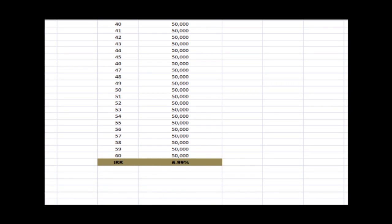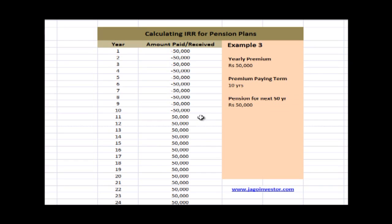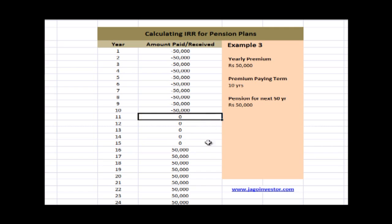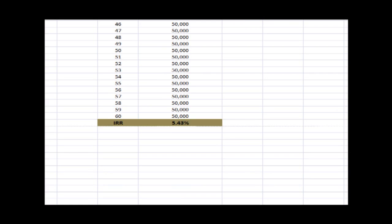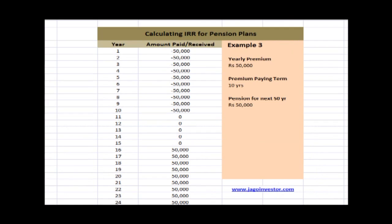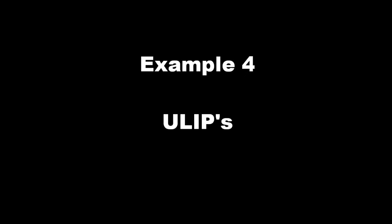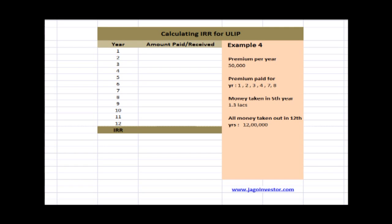The IRR for that scenario comes out to 6.99%. However, in reality the pension amount is often lower — say 40,000 — or there may be a deferral period. For instance, if you pay for 10 years, receive nothing for the next 4 years, and then get a pension from year 15 to year 60, the total IRR drops to 5.43%. This shows exactly what return your pension plan is actually generating.